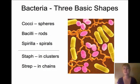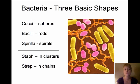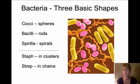We have naming systems for the basic shapes of bacteria. Cocci are spheres — the round bacteria. Bacilli are the rods, and spirilla are the spiral-shaped. If we put 'staph' in the name — a Greek word meaning grapes — that means the bacteria are in clusters. The word 'strep' means they're in chains, linked together one after another.